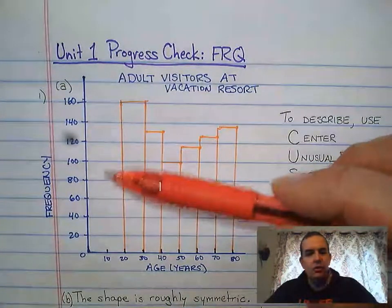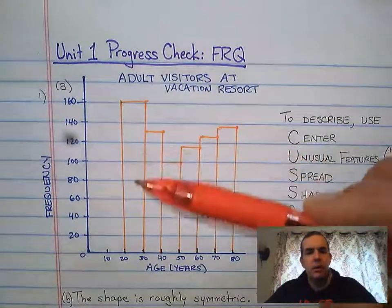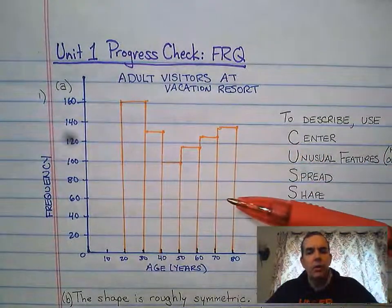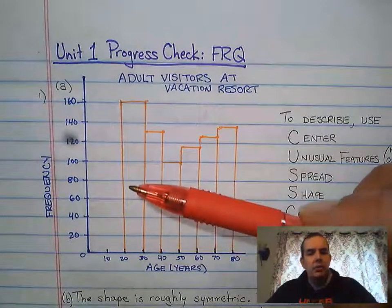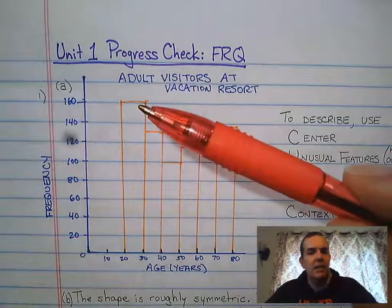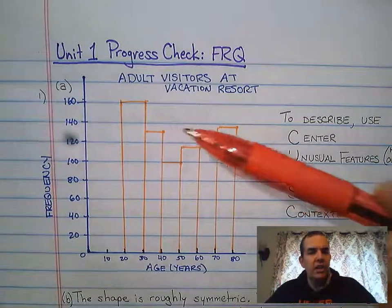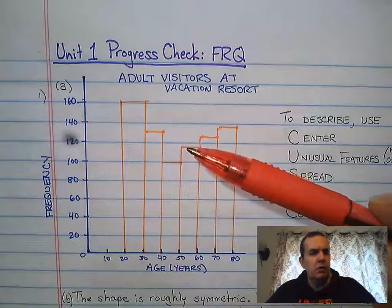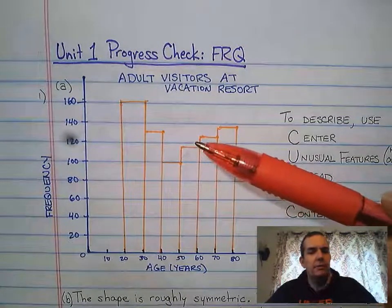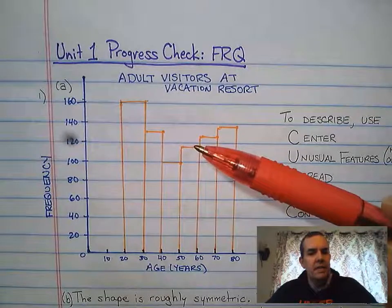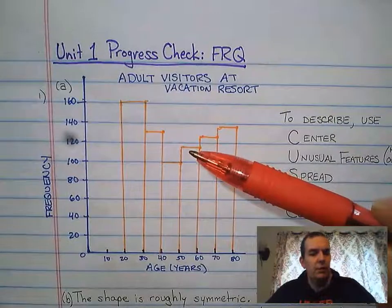Once I have the axes drawn, numbered, and labeled, I'm going to go ahead and create the histogram bars. Notice all the widths are roughly the same — that's something you should try to aim to do — and then I drew them to be the heights given in the problem. This would be our 130, and I believe this one's our 115. It doesn't have to be perfect, it just has to be close enough. They would probably be fine if it was anywhere in this area just for 115.